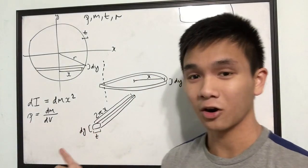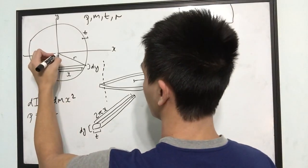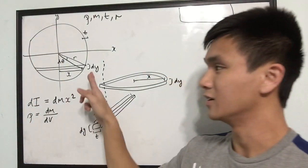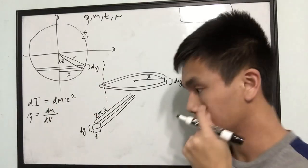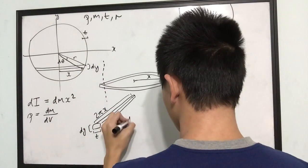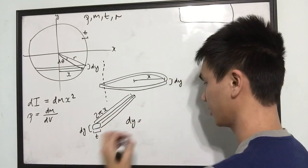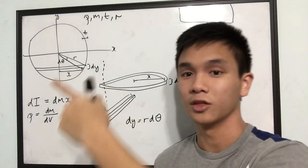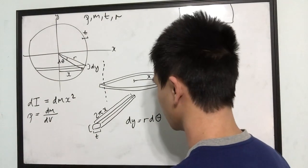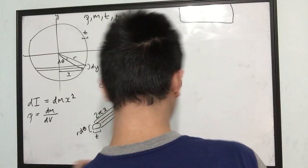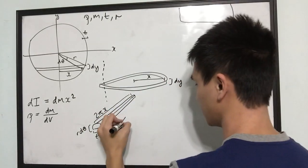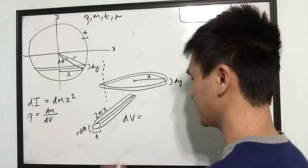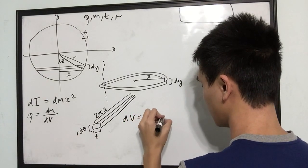If you call this angle here dθ, then dy is really just arc length. Since we're considering a differential arc length, it's just r·dθ — where r is the constant radius of the circle. So the volume of this prism becomes dV = 2πx · r·dθ · t.